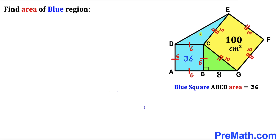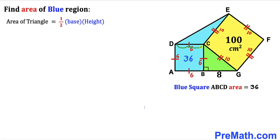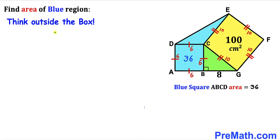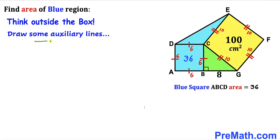Now our task is to calculate the area of blue triangle CDE. Recalling the area of a triangle formula — area equals half times base times height — the base of triangle CDE is 6. However, the height is unknown, so we need to calculate it. We are going to think outside the box and draw some auxiliary lines.